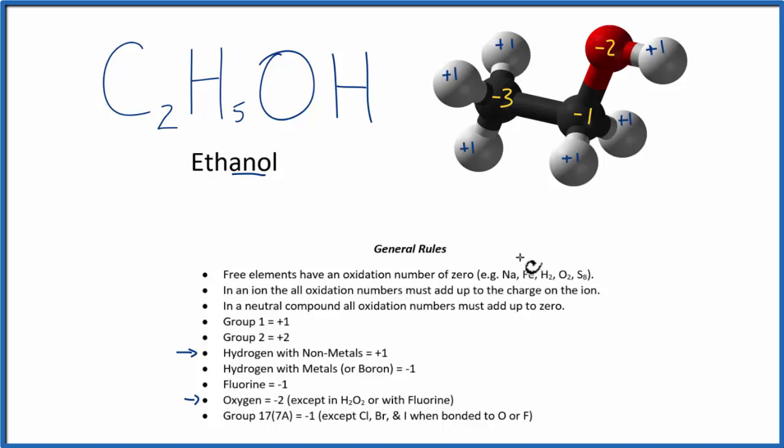And then for this one, ethanol, because we have these two carbons, and they have different things attached to them, we figured out the oxidation number on each carbon based on what it was bonded to.